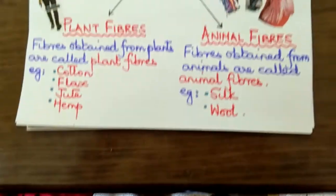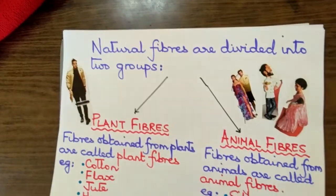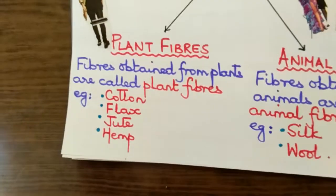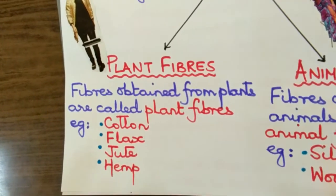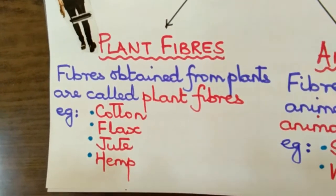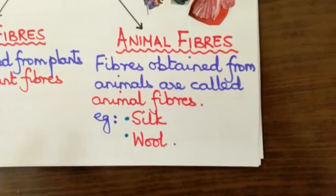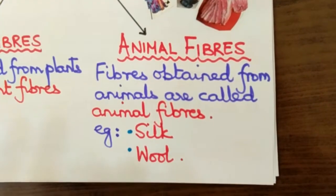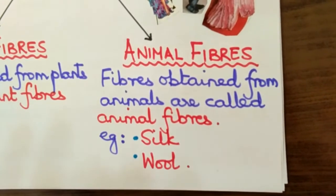Natural fibers are divided into two groups: plant fibers, which are fibers obtained from plants such as cotton, flax, jute and hemp, and animal fibers, which are fibers obtained from animals. They are silk and wool.